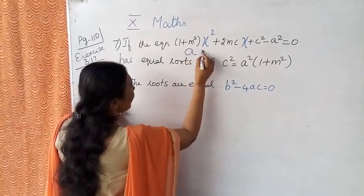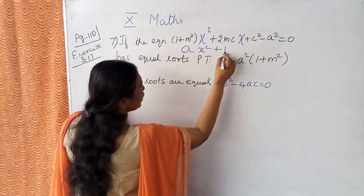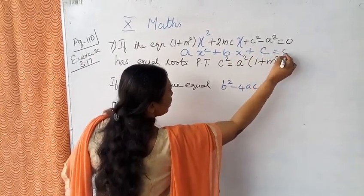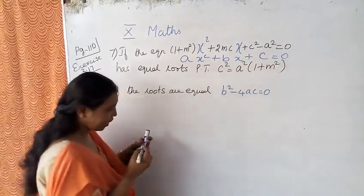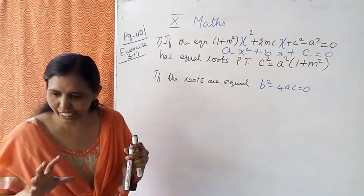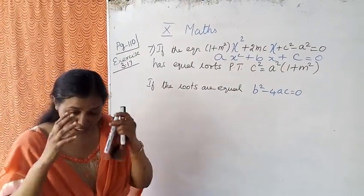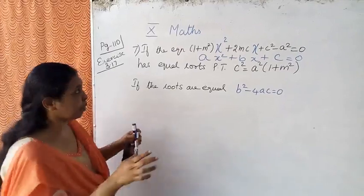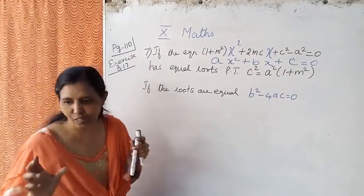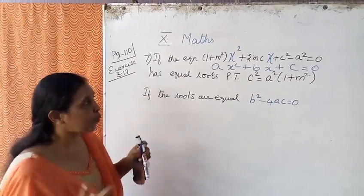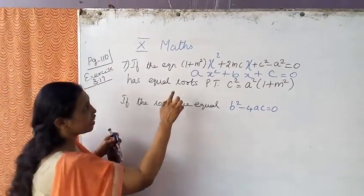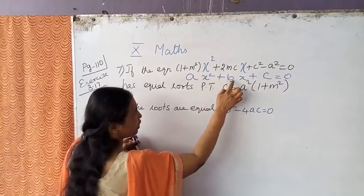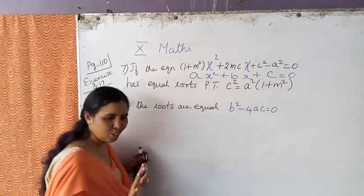A x square plus b x plus c equal to 0. It's a quadratic equation. A quadratic equation: a x square plus b x plus c equal to 0.